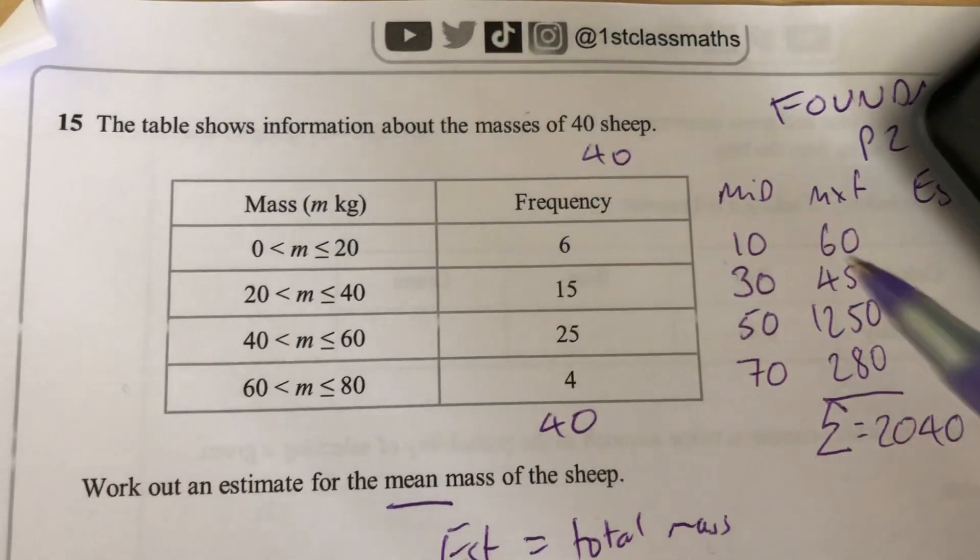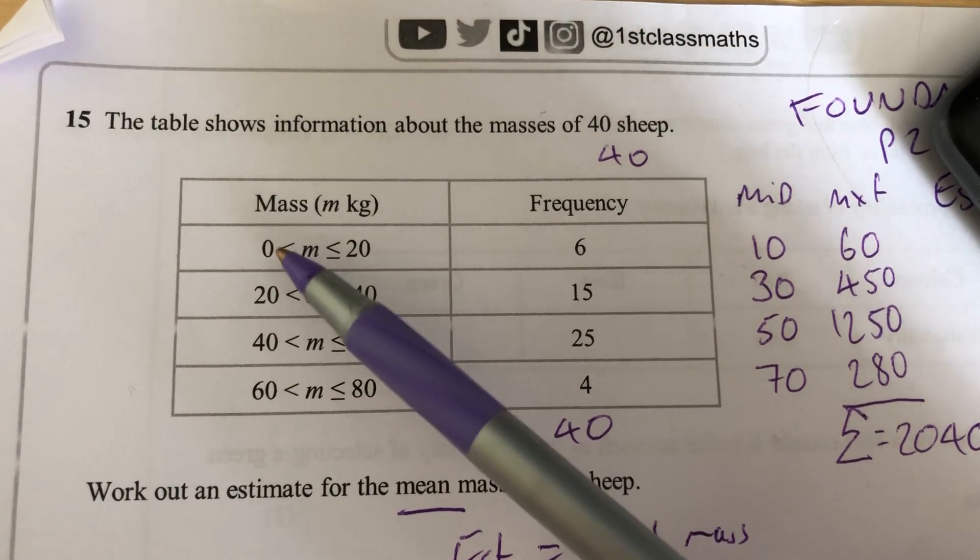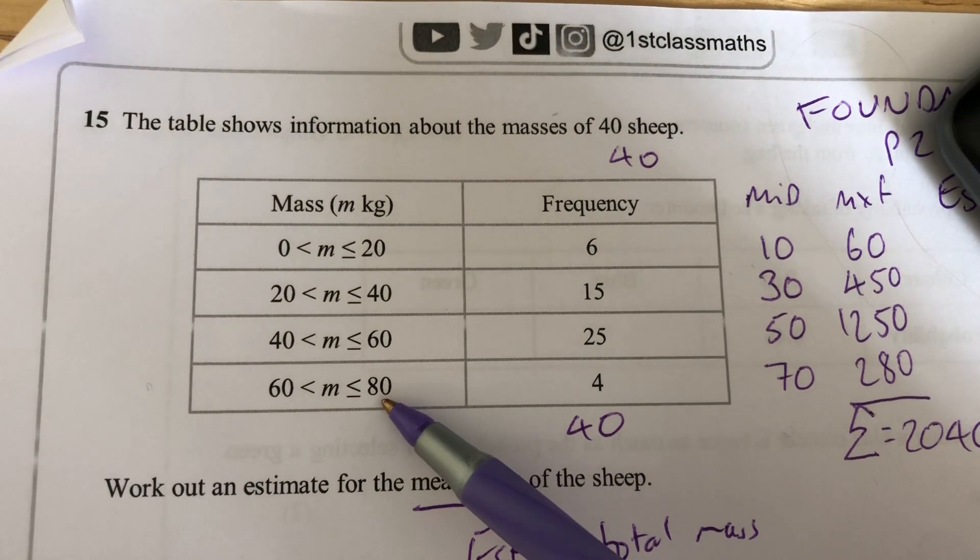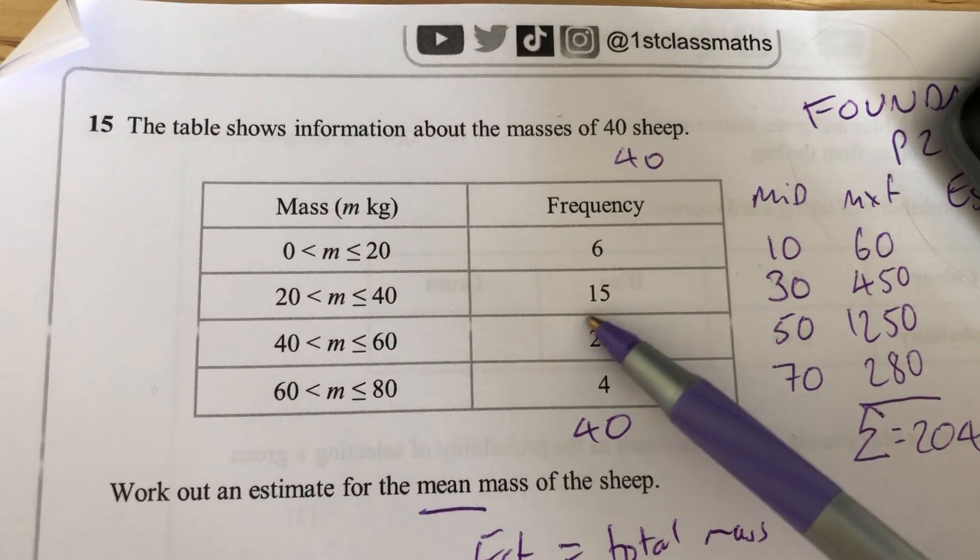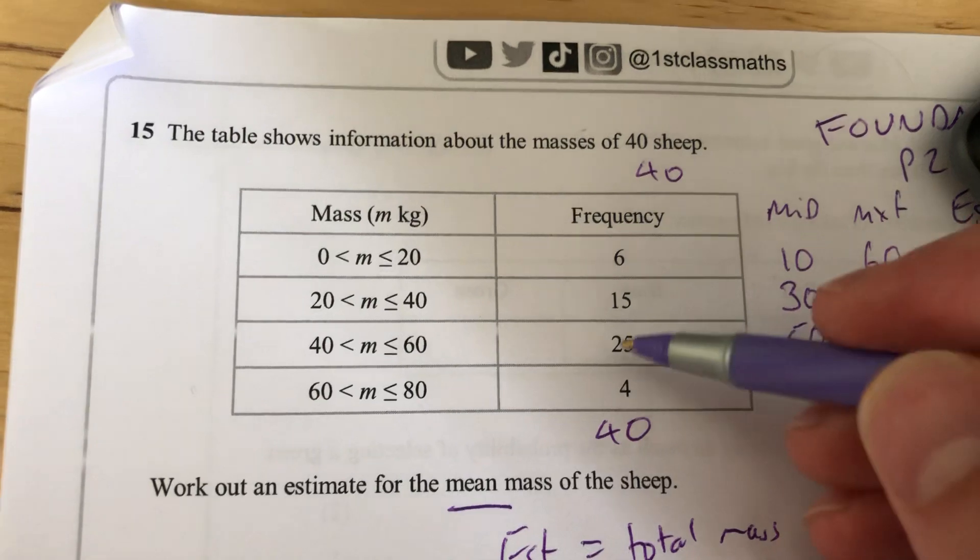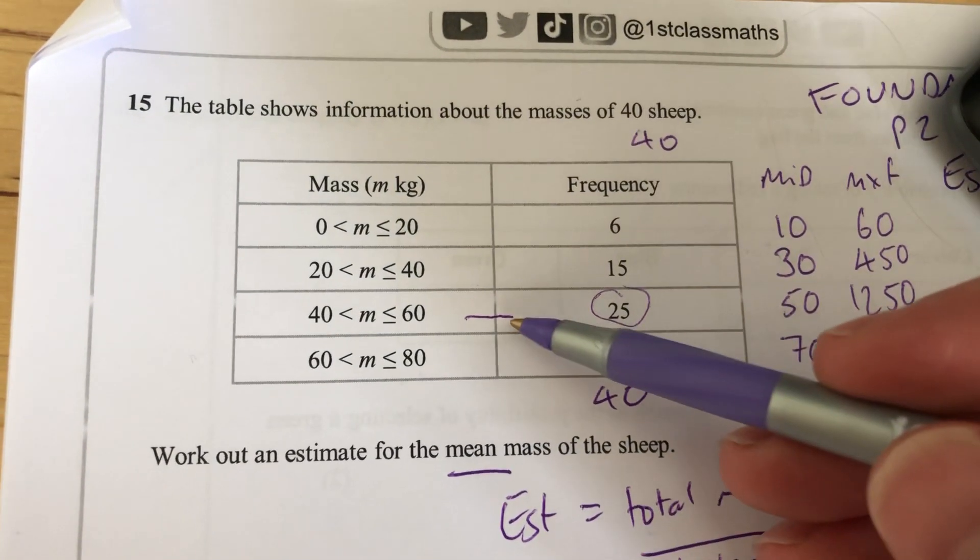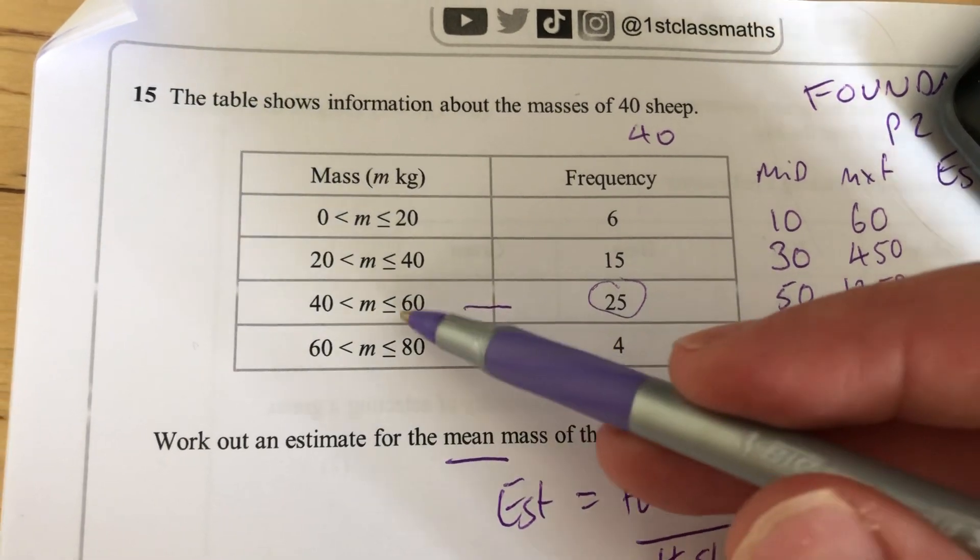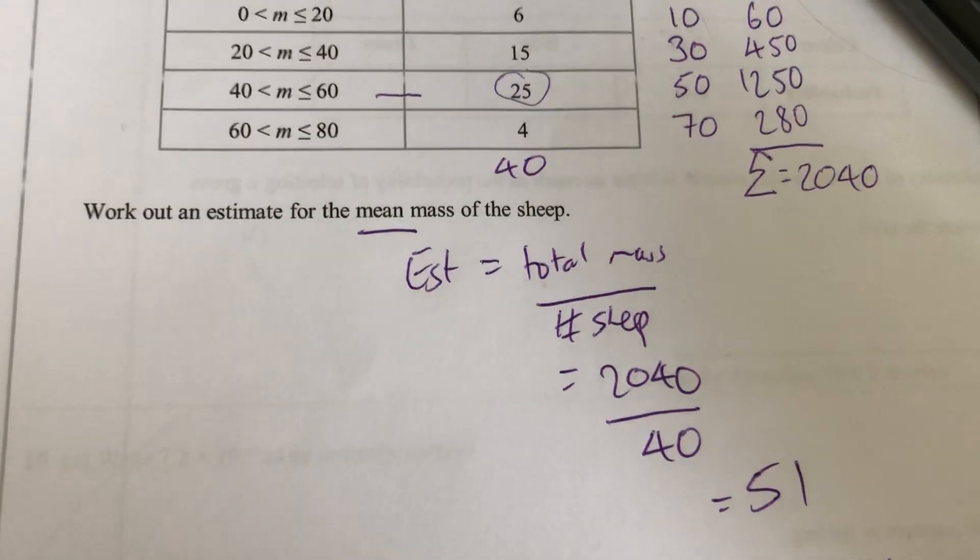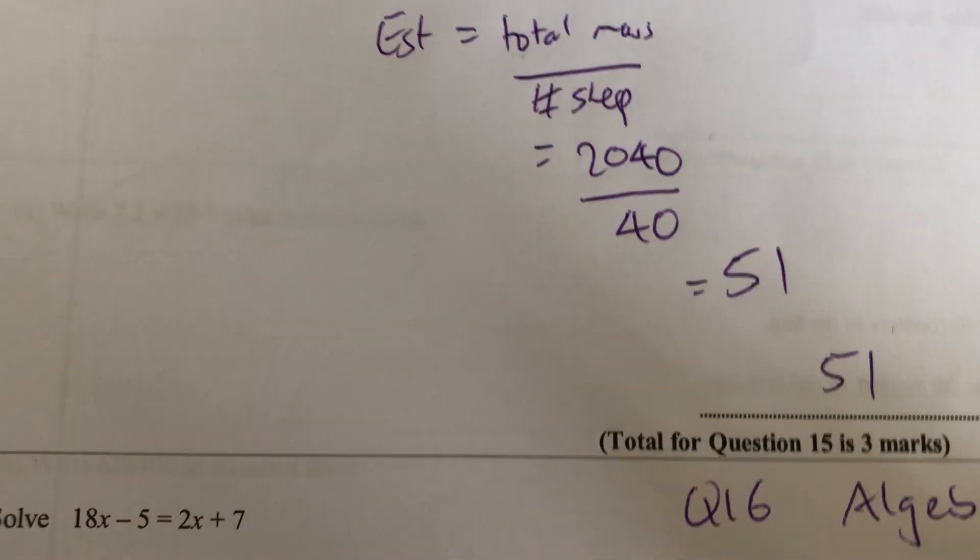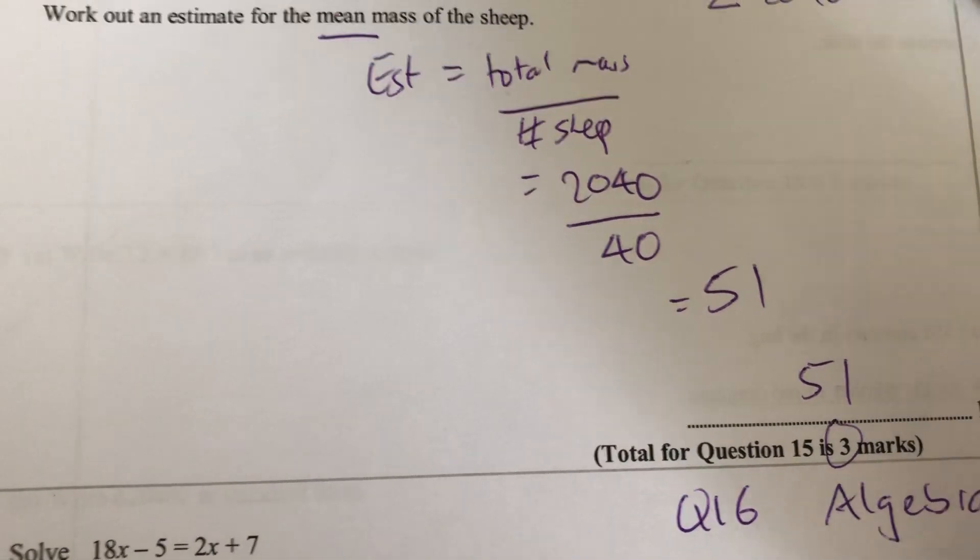Having looked to see, does that kind of make sense? Number one, it's got to be within the interval. It's not less than 0, it's not negative, it's not greater than 80. The modal category is this one here, 40 to 60, so having 51 falling in that makes sense, so I'm happy with that. That's 3 marks in just under 3 minutes.